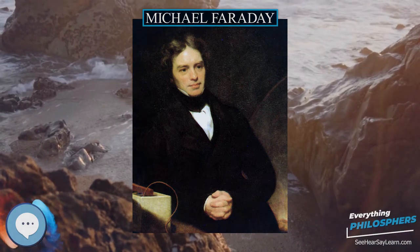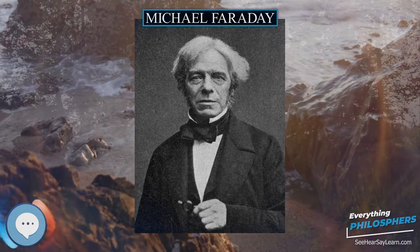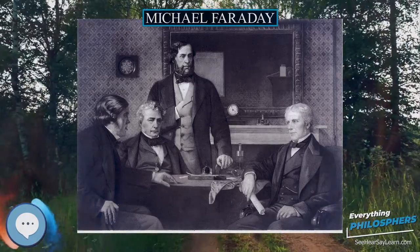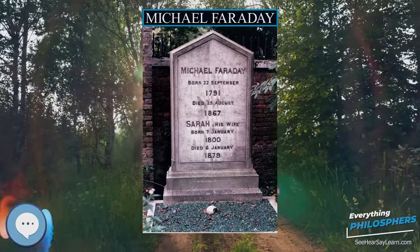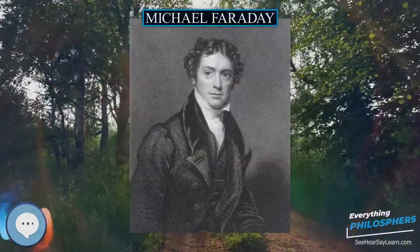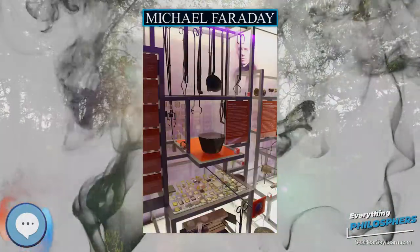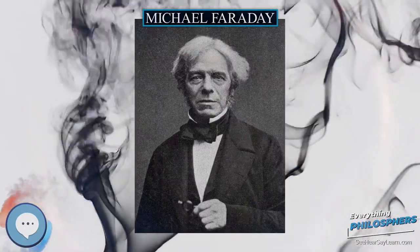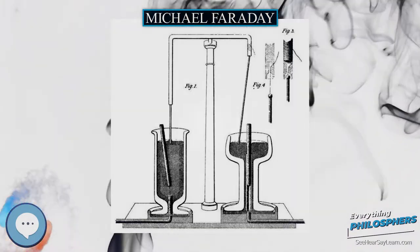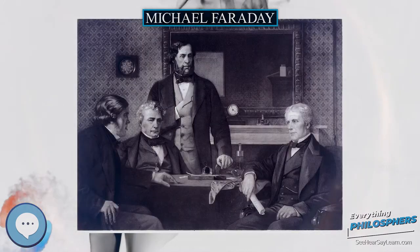The young Michael Faraday, who was the third of four children, having only the most basic school education, had to educate himself. At the age of 14 he became an apprentice to George Riebau, a local bookbinder and bookseller in Blandford Street. During his seven-year apprenticeship Faraday read many books, including Isaac Watts' The Improvement of the Mind, and enthusiastically implemented the principles and suggestions contained therein. He also developed an interest in science, especially in electricity. Faraday was particularly inspired by the book Conversations on Chemistry by Jane Marcet.